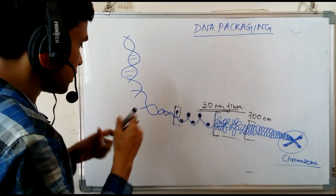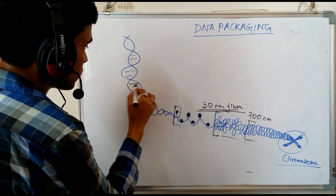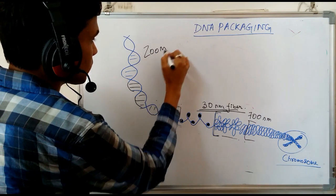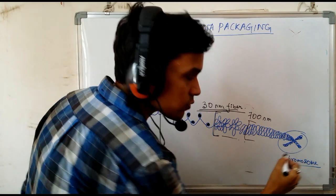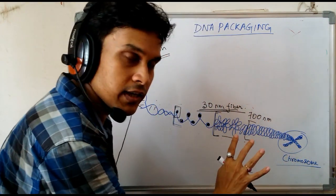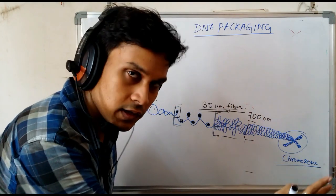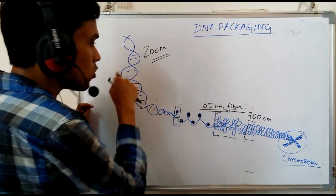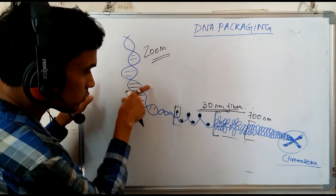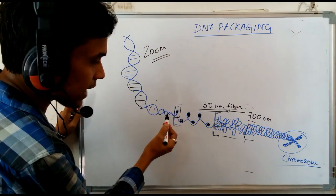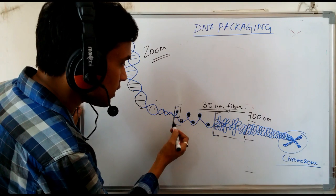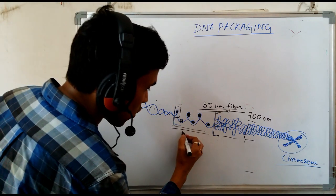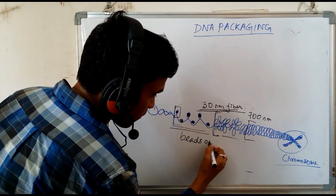As I have already drawn here, this is the DNA structure — the zoomed-in structure. And this is the chromosome structure, which is the final compaction level of DNA inside the chromosome — this is the zoomed-out structure. I am trying to describe from the zoomed-in structure. If I zoom out the DNA, the double-stranded structure cannot be visualized separately, but you can see something like this, called beads on a string.